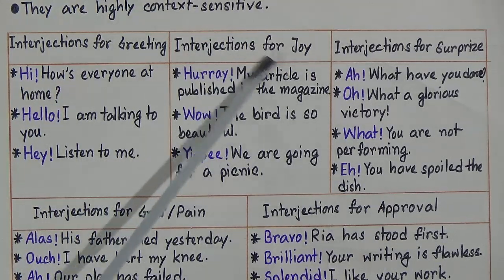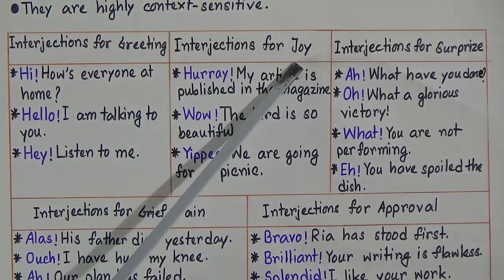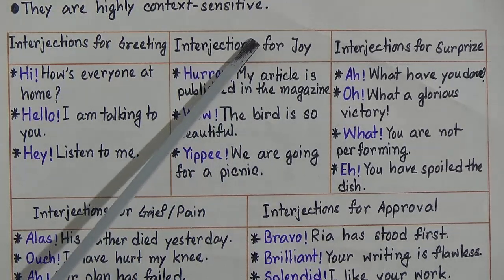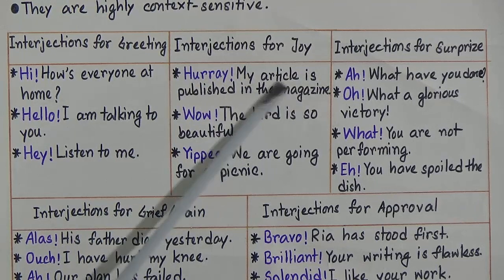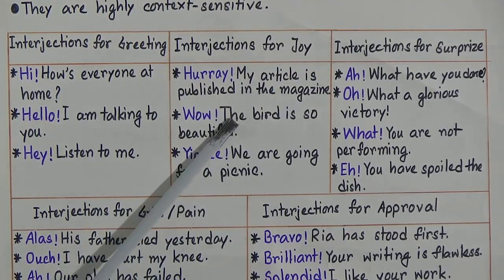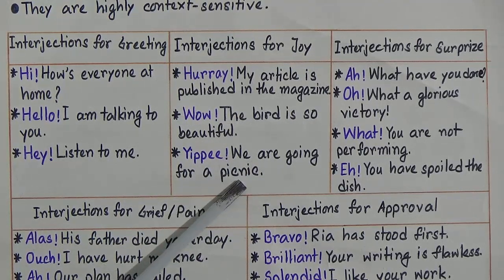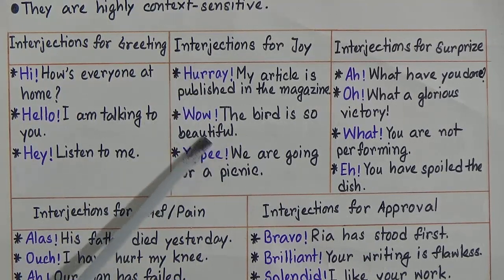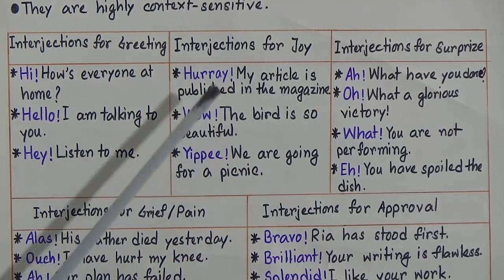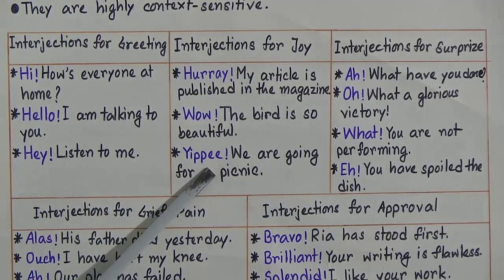Interjections for joy are used to show the strong feeling or emotion of happiness. For example: Hooray! My article is published in the magazine. Wow! The bird is so beautiful. Yippee! We are going for a picnic. These words express our feeling of joy, so we use hooray, wow, and yippee to express joy or happiness.